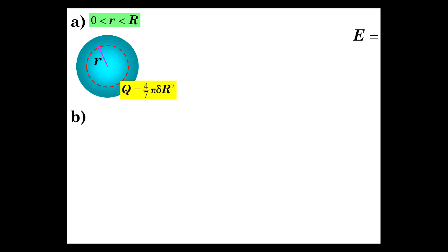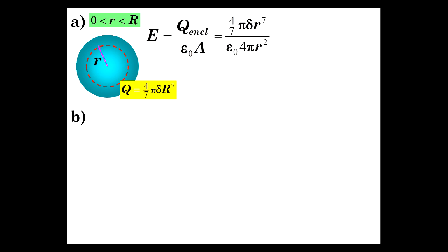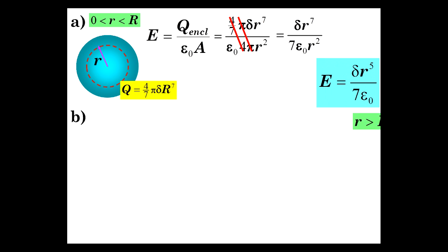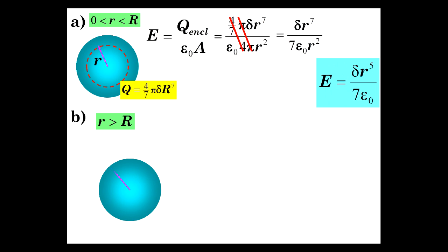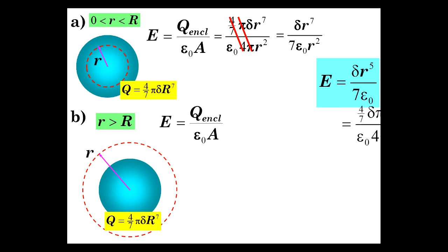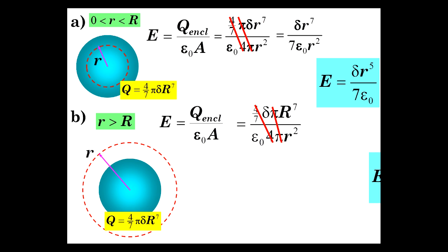The electric field for r inside the sphere: we pick a Gaussian surface, and the charge enclosed is 4/7 π δ r⁷ (little r now). E is q-enclosed over ε₀, giving us the E-field inside. Outside, we pick a Gaussian surface outside, and q encloses all of it — so now you see big R instead of little r — over the same surface area formula. We get E = δR⁷ / (7ε₀r²).